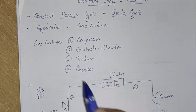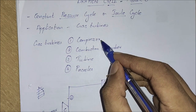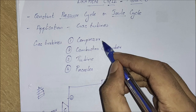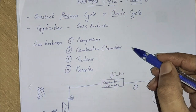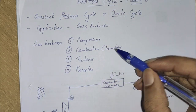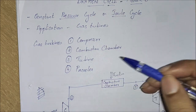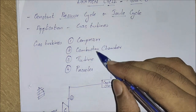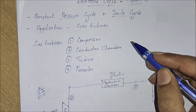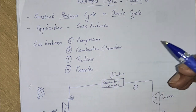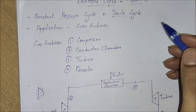In a closed cycle gas turbine, we have four different components: the first one is the compressor, then the combustion chamber, turbine, and a pre-cooler. These four constitute the main parts of a closed cycle gas turbine.